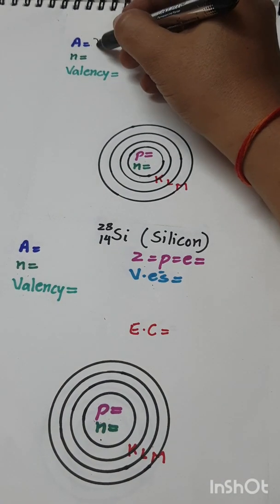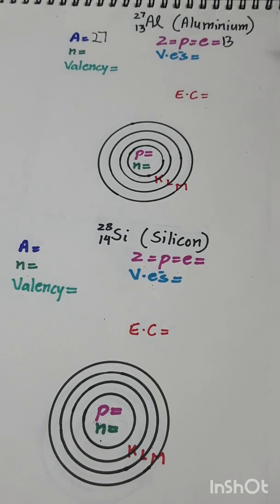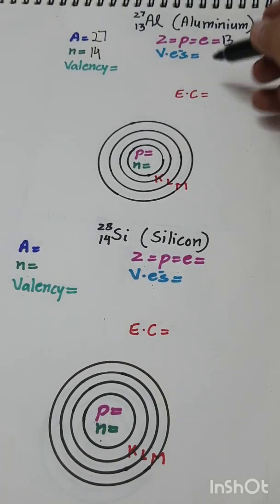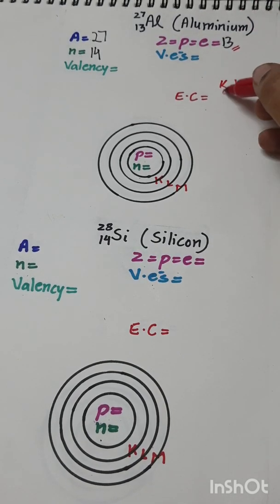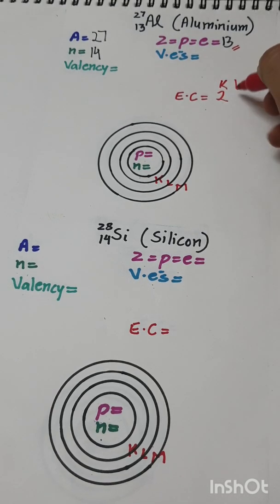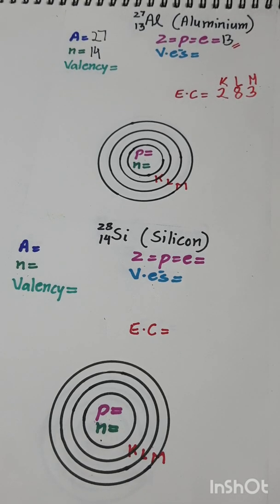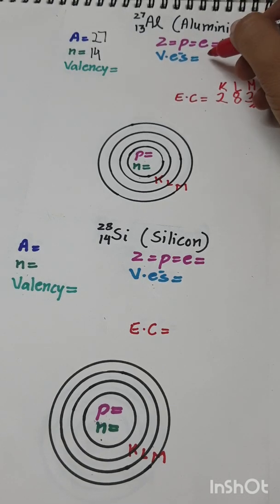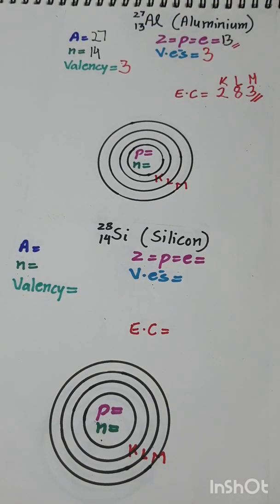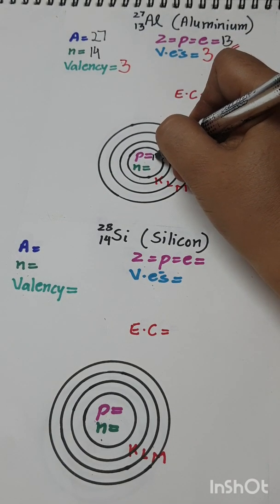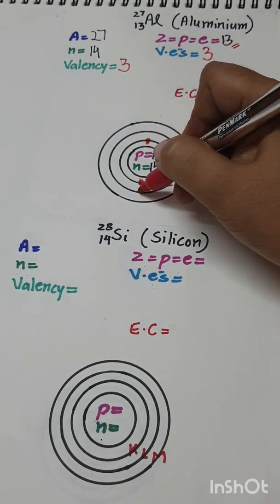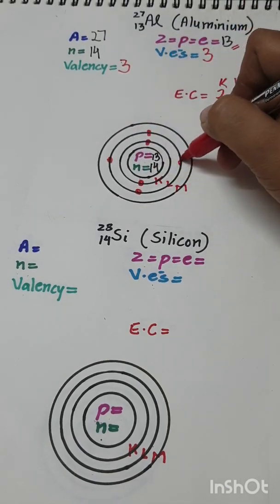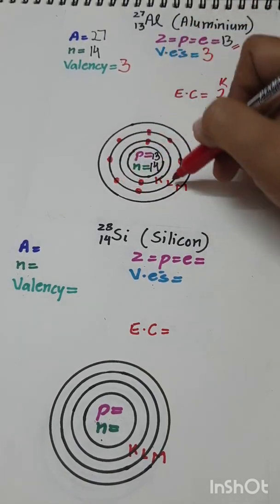Aluminium: A = 27, Z = 13, n = 27 − 13 = 14. Electronic configuration — K shell: 2, L shell: 8, leaving 3 electrons for the M shell. EC is 2, 8, 3. The outermost M shell has 3 valence electrons, so valency = 3. Number of protons = 13, number of neutrons = 14.